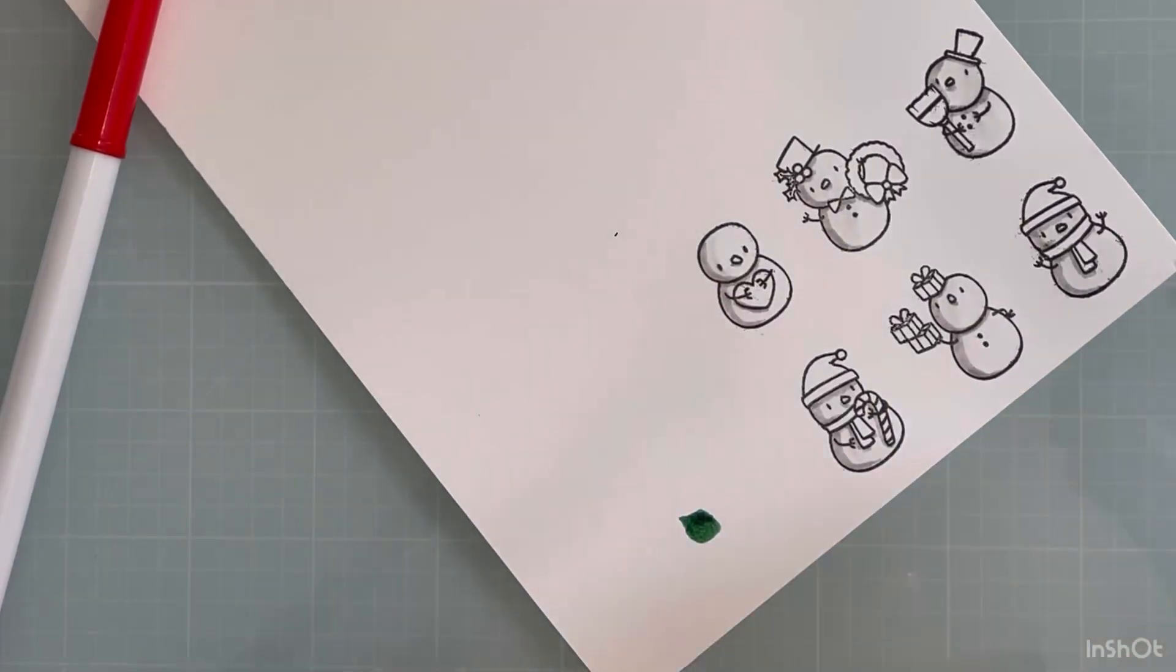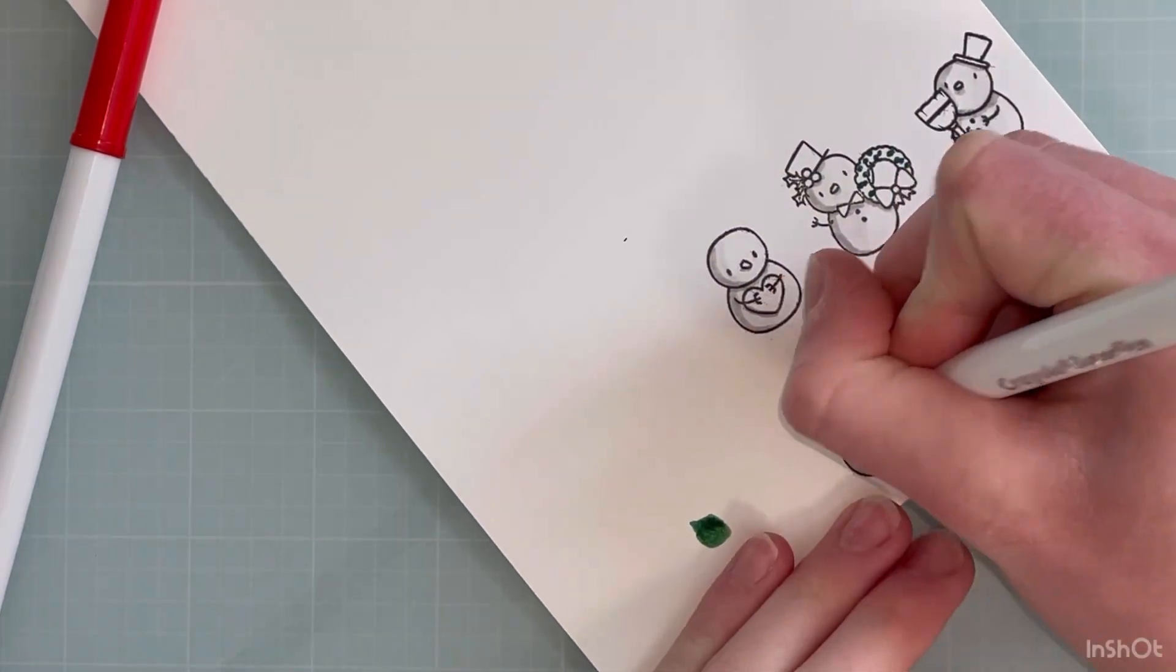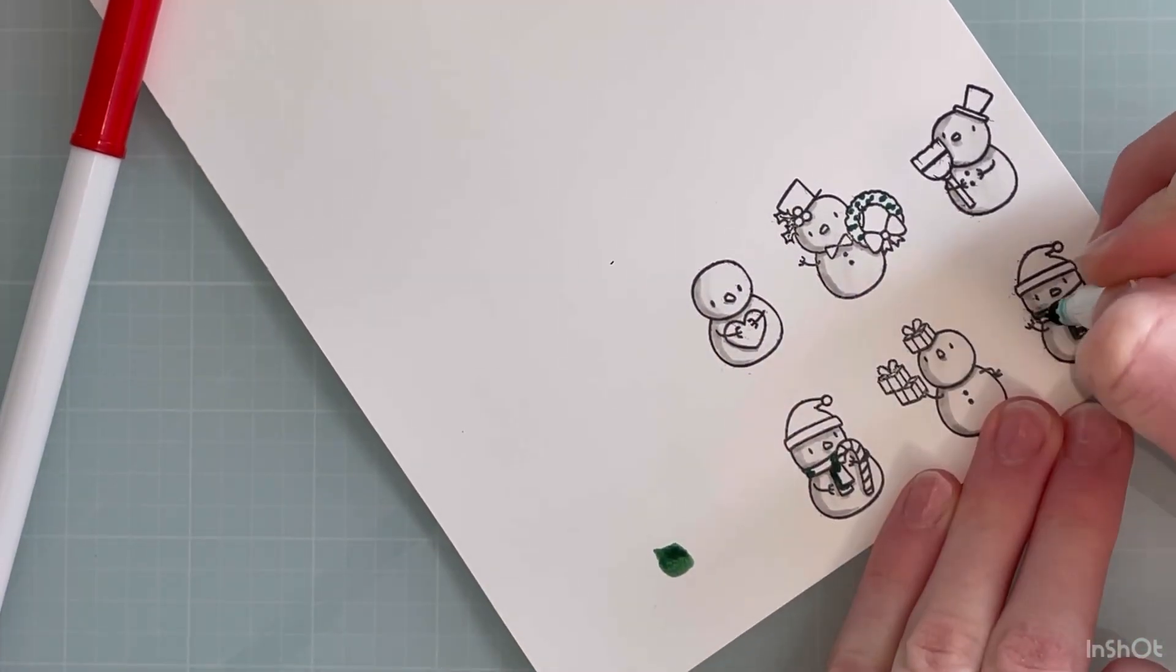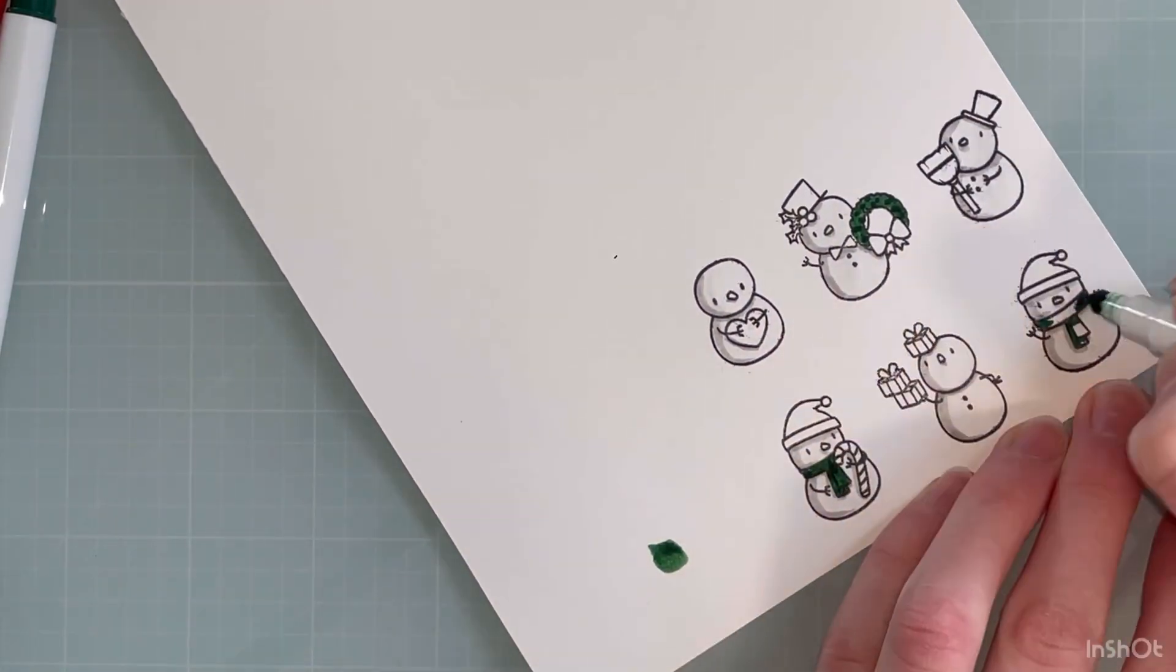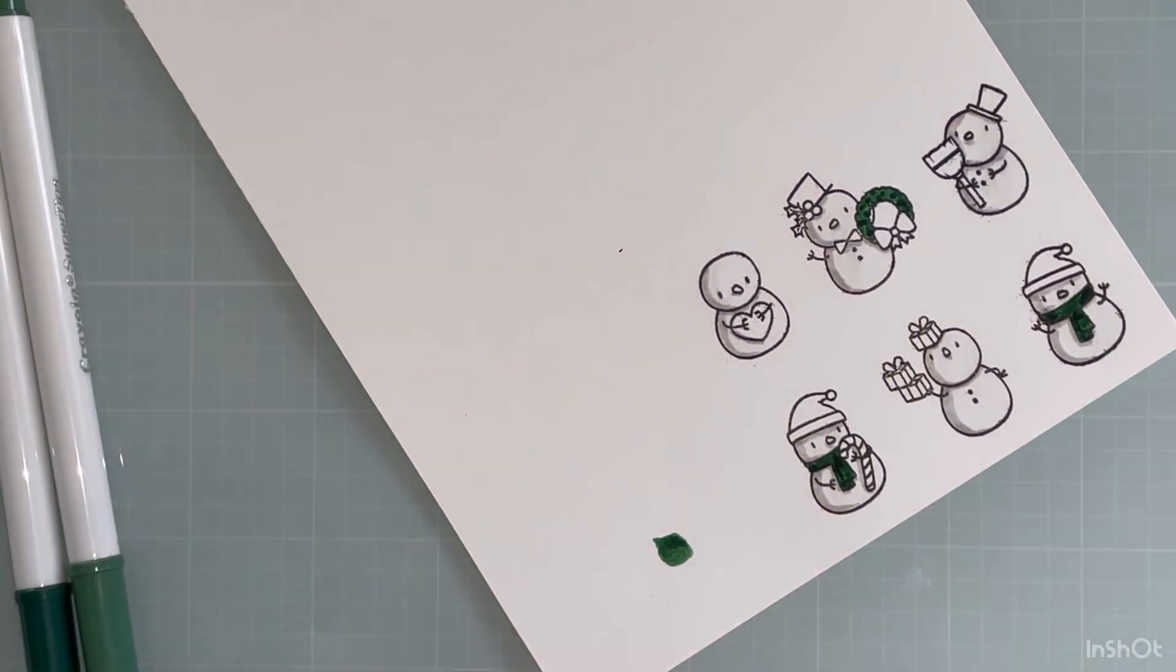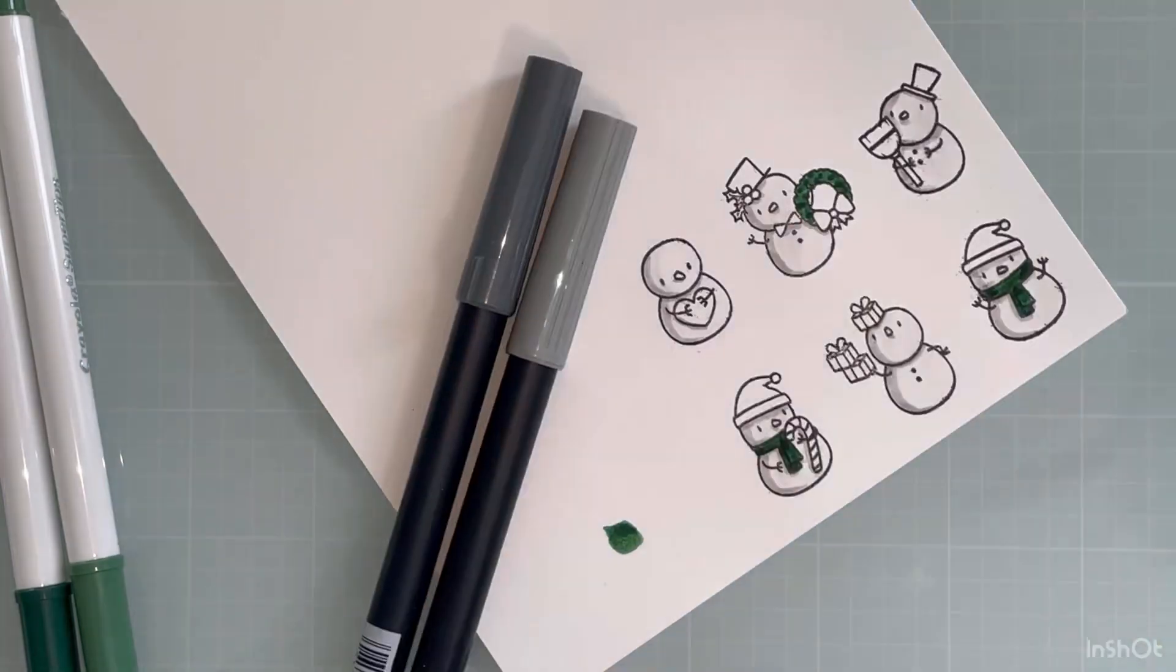So I started with this light gray and I just added shadows to the left-hand side of the snowman and blended it out with a blender. And then I'm coming in with just some Crayola markers and adding a little bit of dimension. I chose two colors for each, I think.